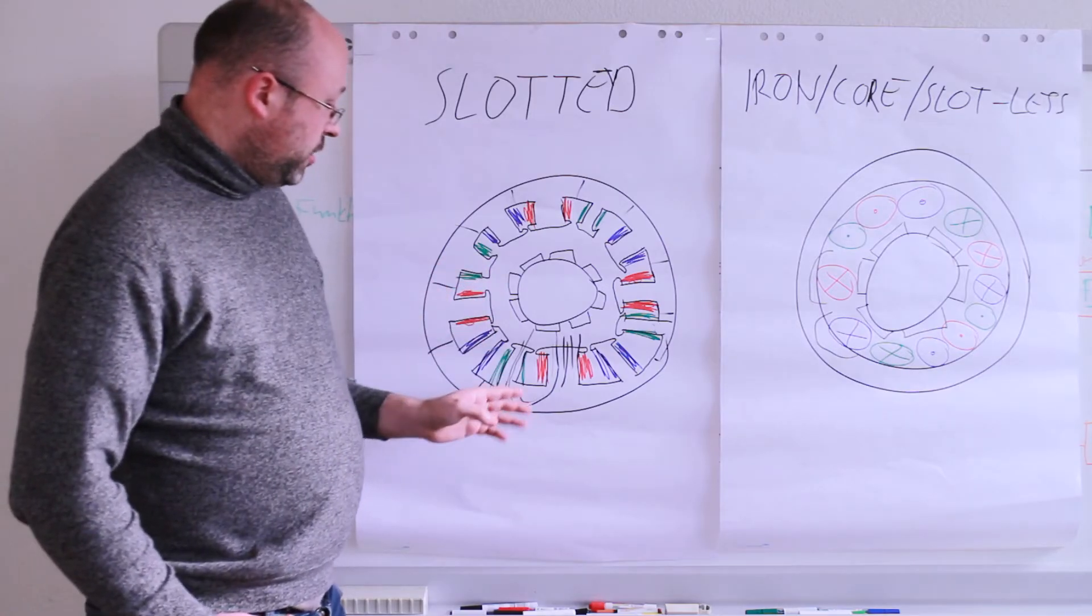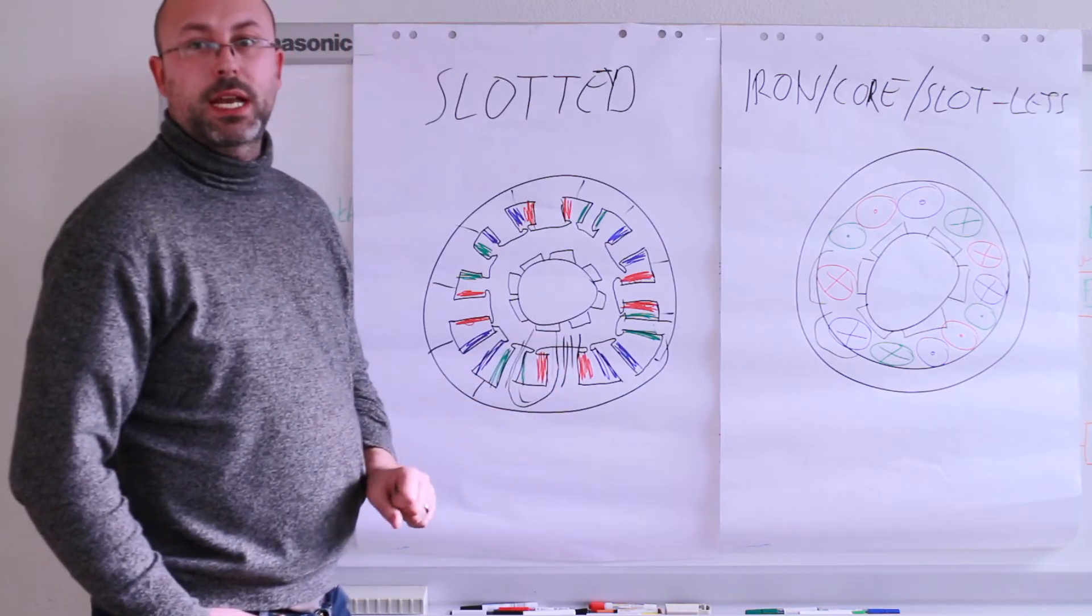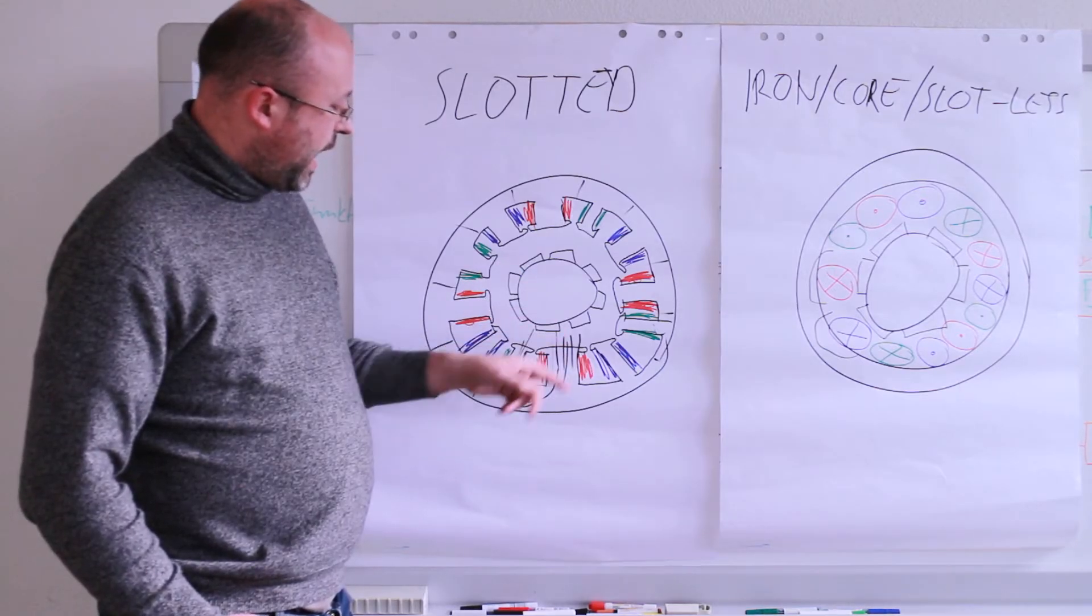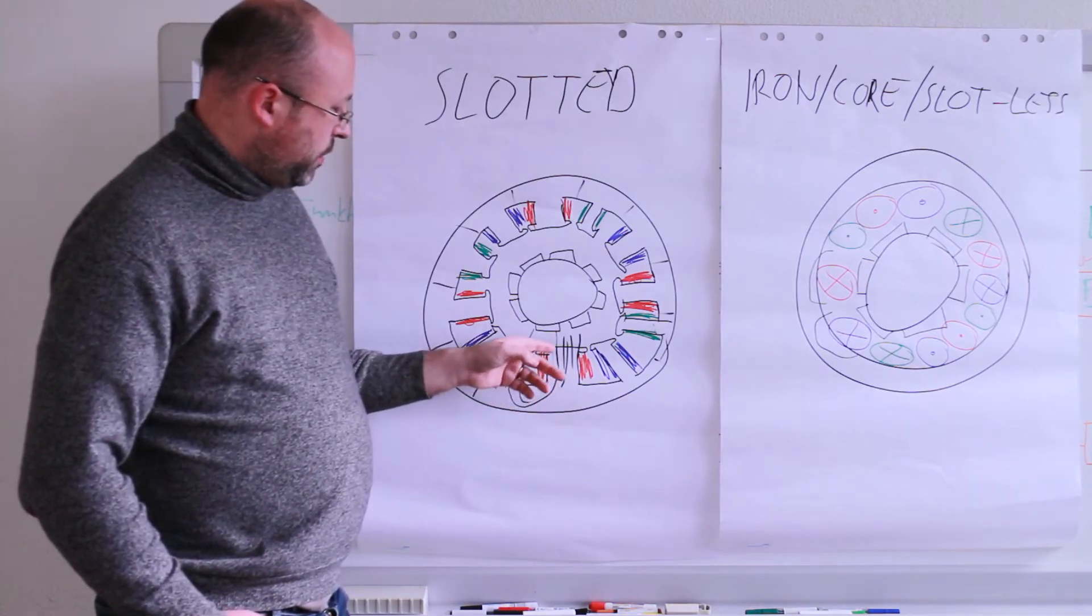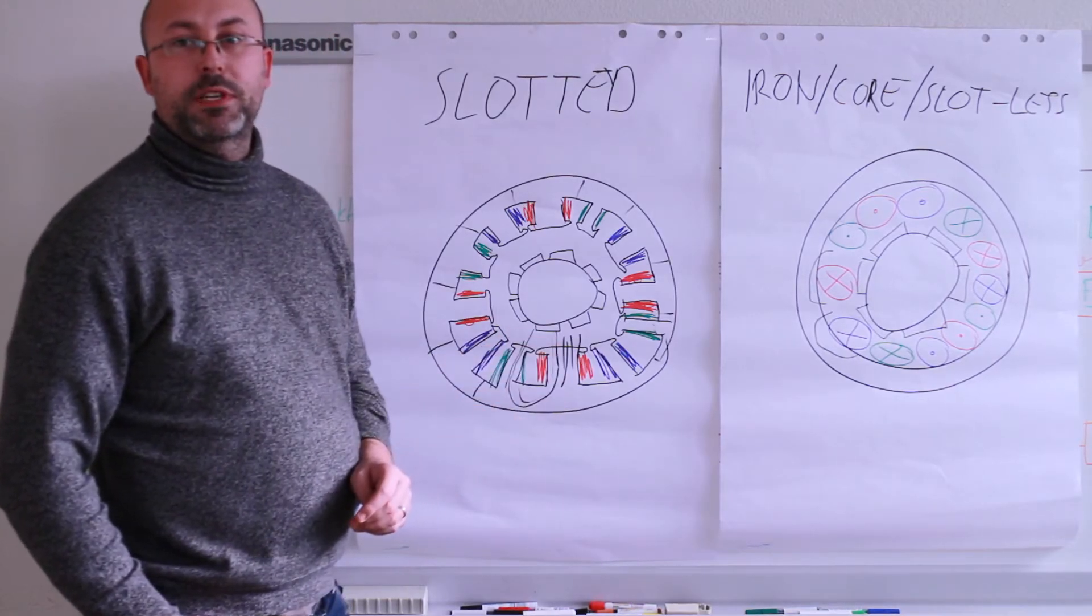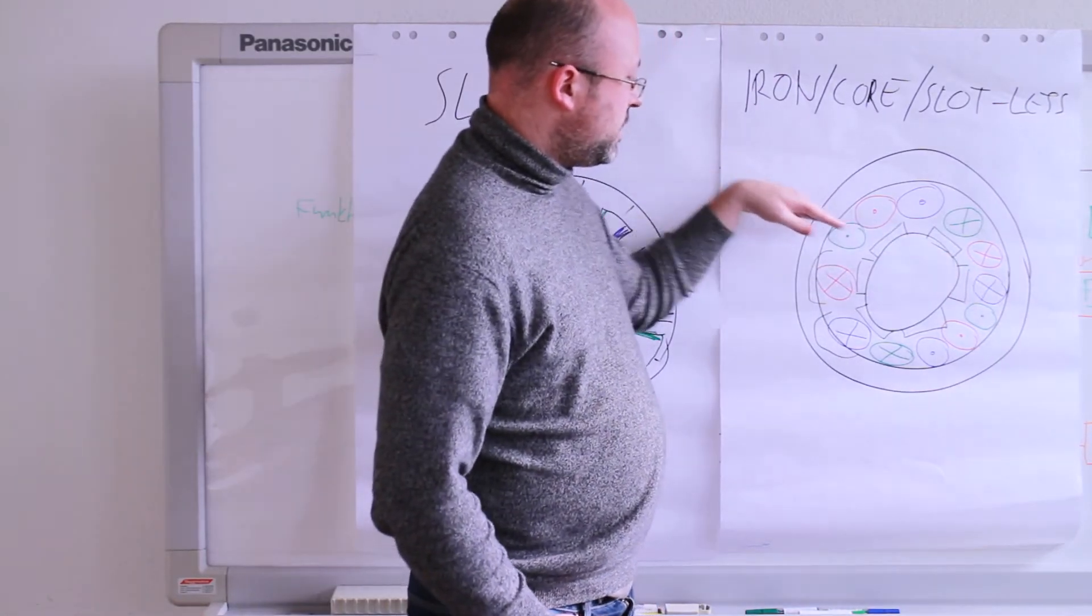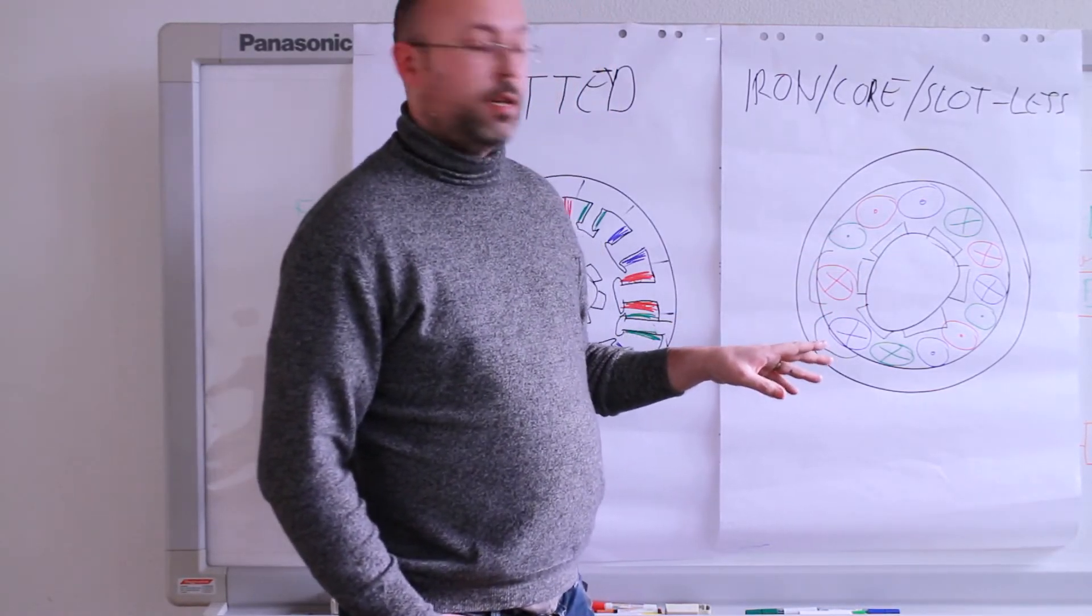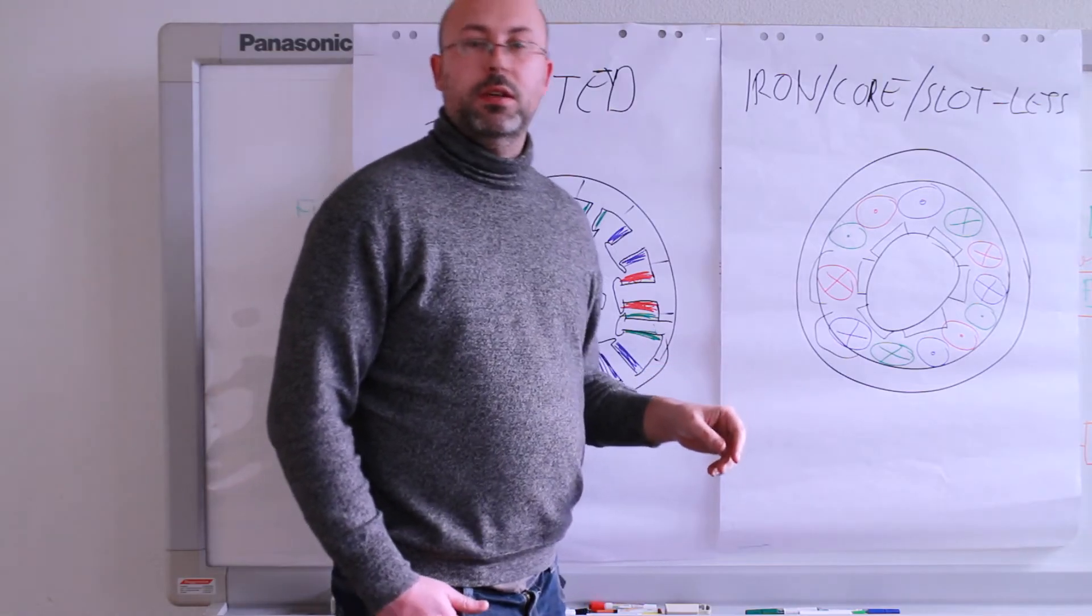One thing I assume is that you get a higher torque density with the slotted motor because you have the concentration of the magnetic field inside the coil thanks to the iron. I think we can get a higher field density close to the magnet which then results in higher torque. What someone also told me is it's easier to estimate where the magnetic field is going because it's precisely guided within that tooth, compared to the slotless design where we just know it's somewhere in that coil. Please don't look too much at my drawings, it's just a rough sketch.